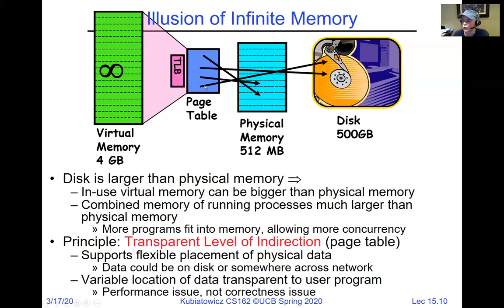The principle here is a transparent level of indirection. When using virtual memory, the processor doesn't have to know it's virtual. All accesses get translated through the TLB — if the page is in physical memory, we get fast access; if not, we get a page fault, pull things into physical memory, possibly evict something else, and adjust page tables. This is done transparently to the program by the operating system. The page table lets us place portions of the address space anywhere in physical memory, giving flexibility in how we use physical memory across processes.